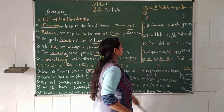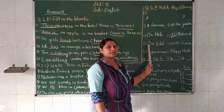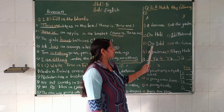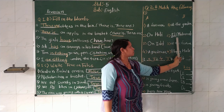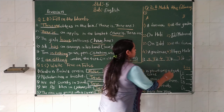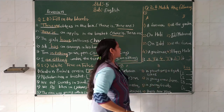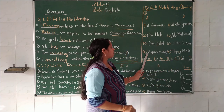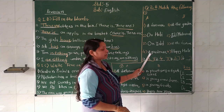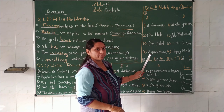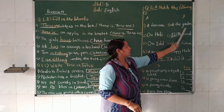Holi ને આપણે 'Happy Holi' કહીએ છીએ. ત્યાં 'Happy Holi' marigold (garden) સંદર્ભ છે. 'A' - Garden. Garden ક્યાં હોય - head garden/kitchen garden.